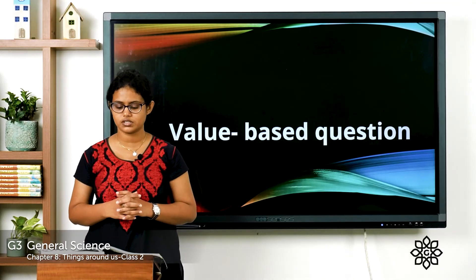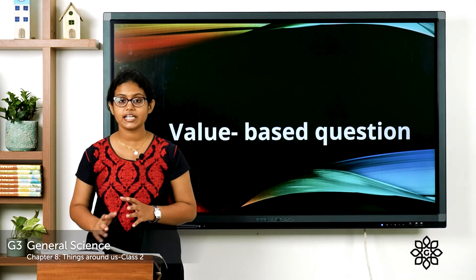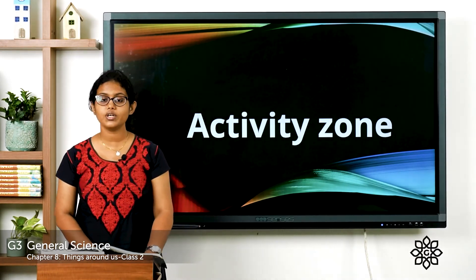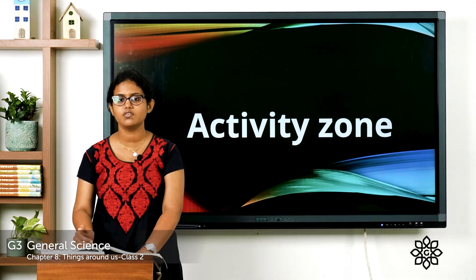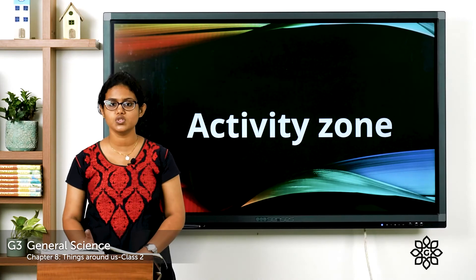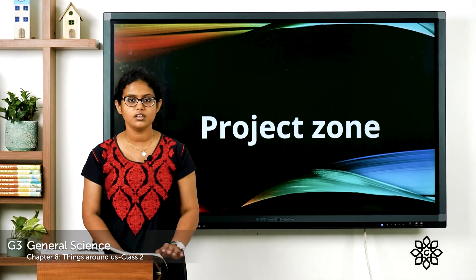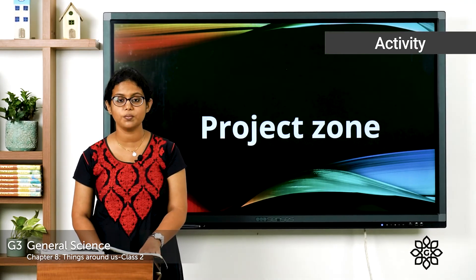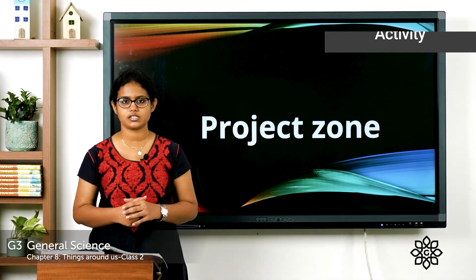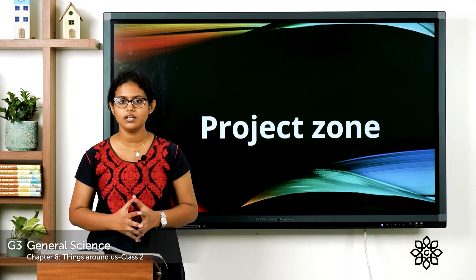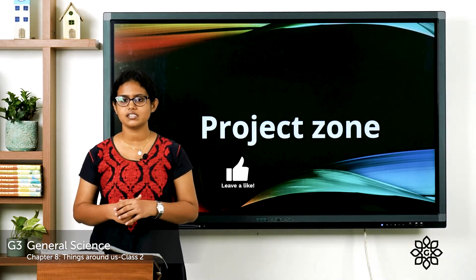Next is a value-based question with five questions for you to read and answer. Then the activity zone: make a newspaper bag by following the given instructions — you can take help from your elders. The project zone asks you to make colorful posters describing man-made and natural things. Once done, submit to Microsoft Teams. We are done with the chapter and will start a new one next class.